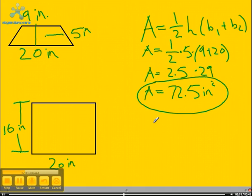Now we have to find the area of the rectangle. The area of the rectangle is the base times the height. So we have to do 20 times 16. Once we multiply those out, we come up with 320 inches squared.